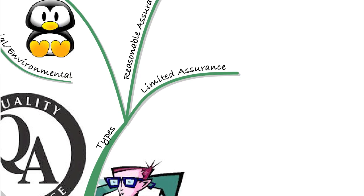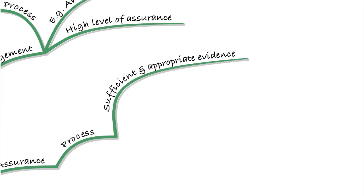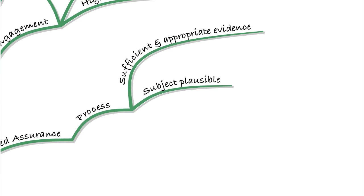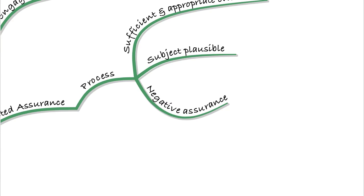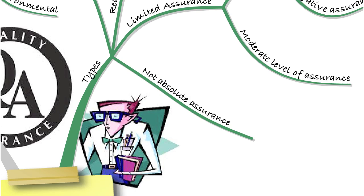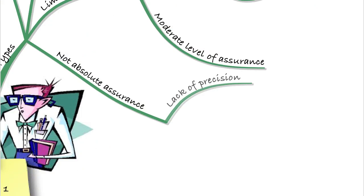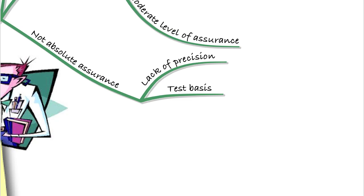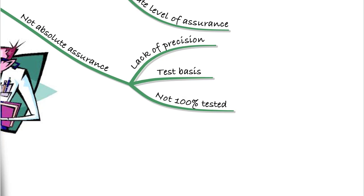On to a limited assurance engagement. The process again is to gather sufficient and appropriate evidence, but here we're gathering to say that the subject matter is plausible. The report is in the form of negative assurance — there's nothing to suggest the criteria haven't been met. This doesn't give much assurance; it's a moderate level. An example would be a review engagement. Remember, none of these give absolute assurance because we don't test 100% of transactions — the audit is conducted on a test basis using samples.